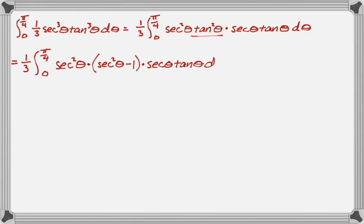I'm like almost done. Now I'm going to do u substitution just to make this a lot easier. So u is secant theta. du is secant theta tan theta. And then I can change the whole integral into u squared, u squared minus 1, du.